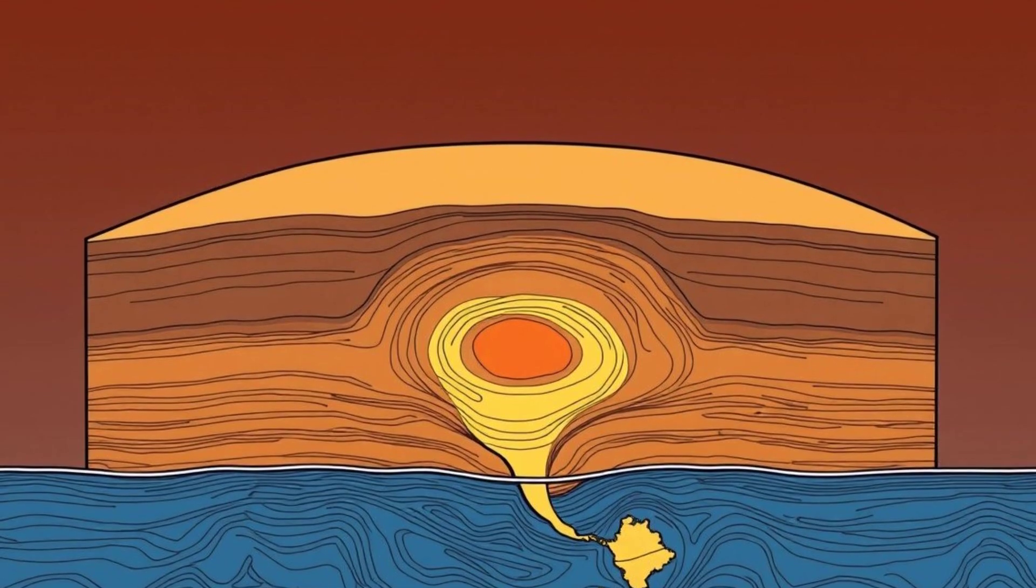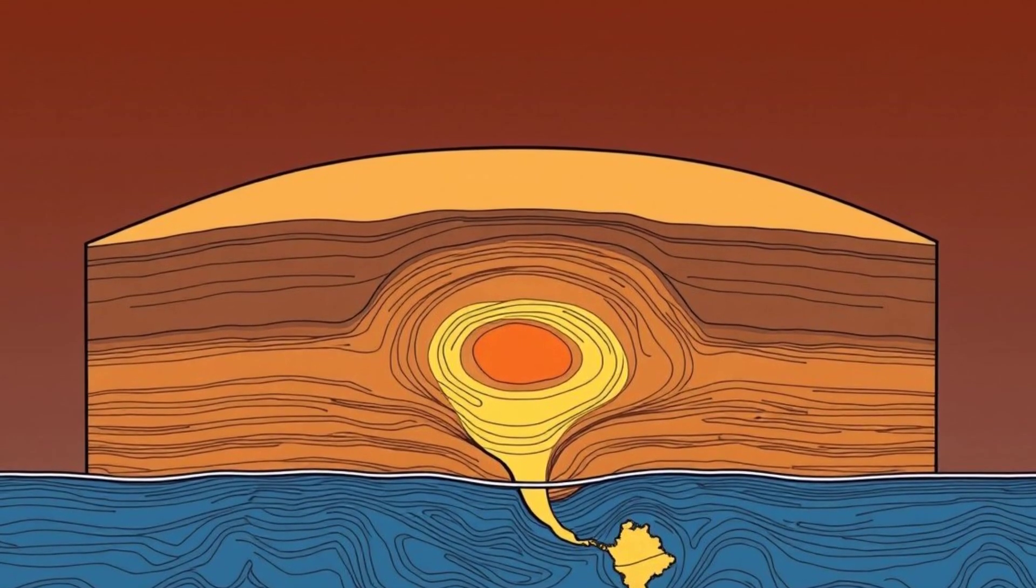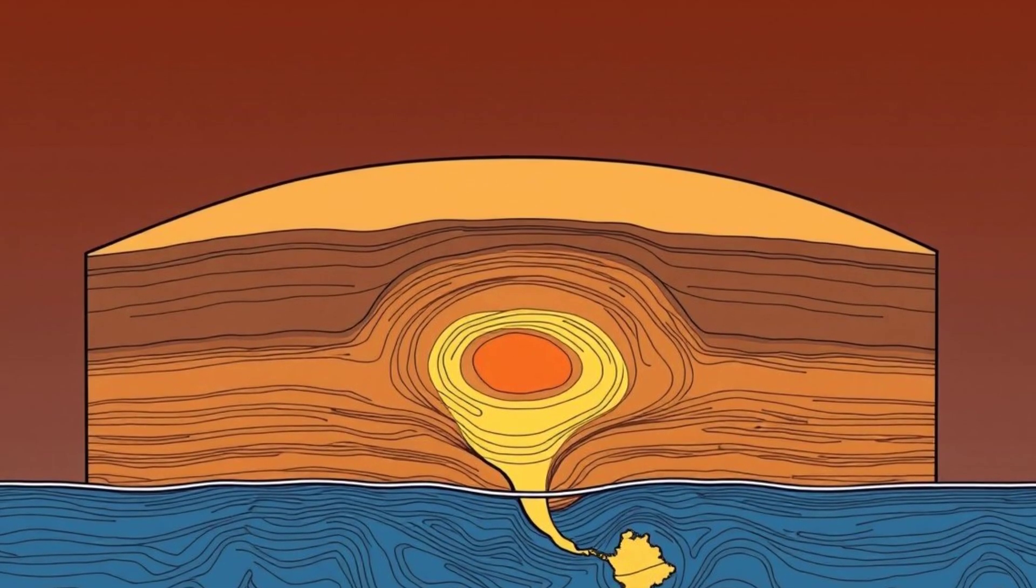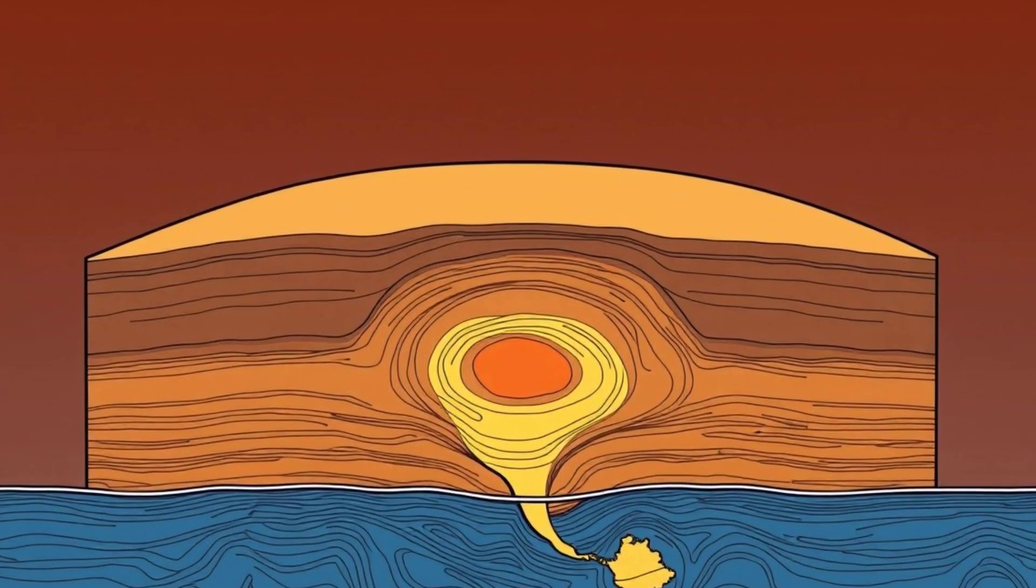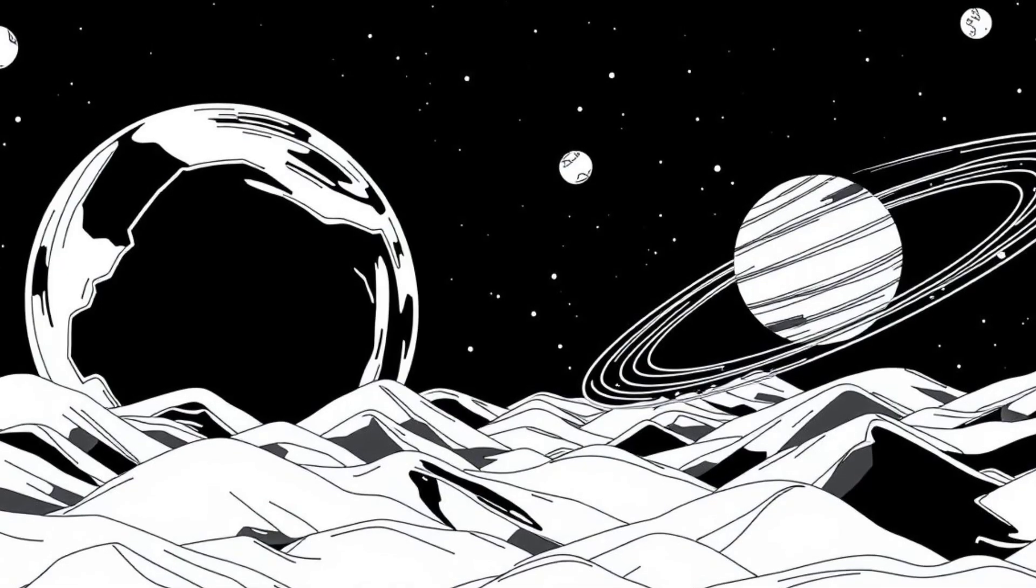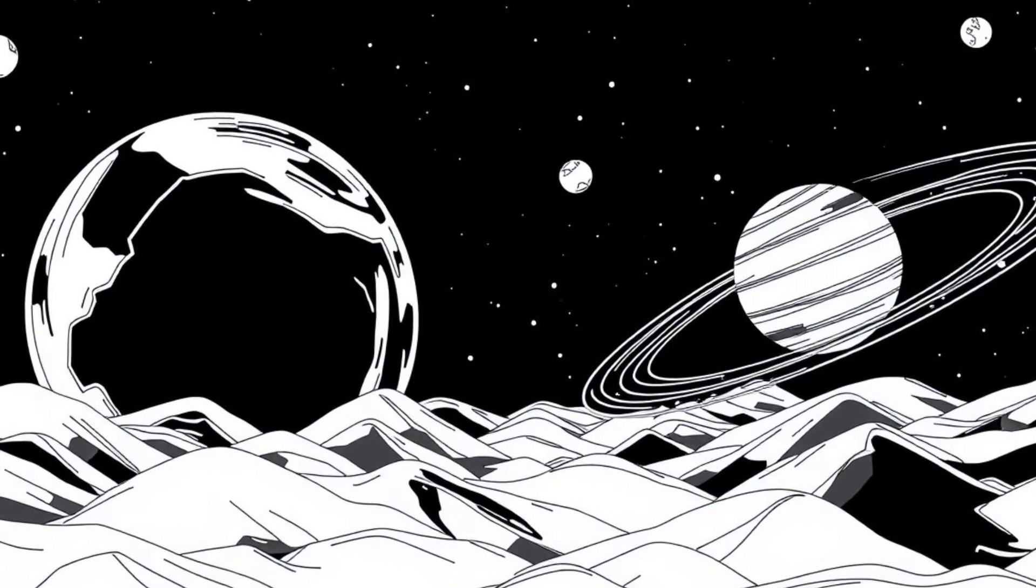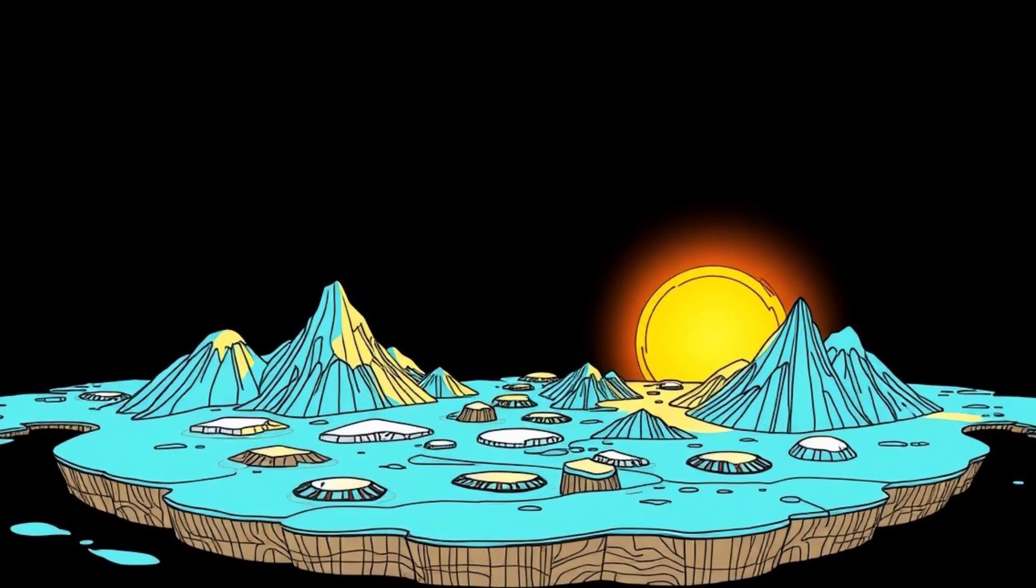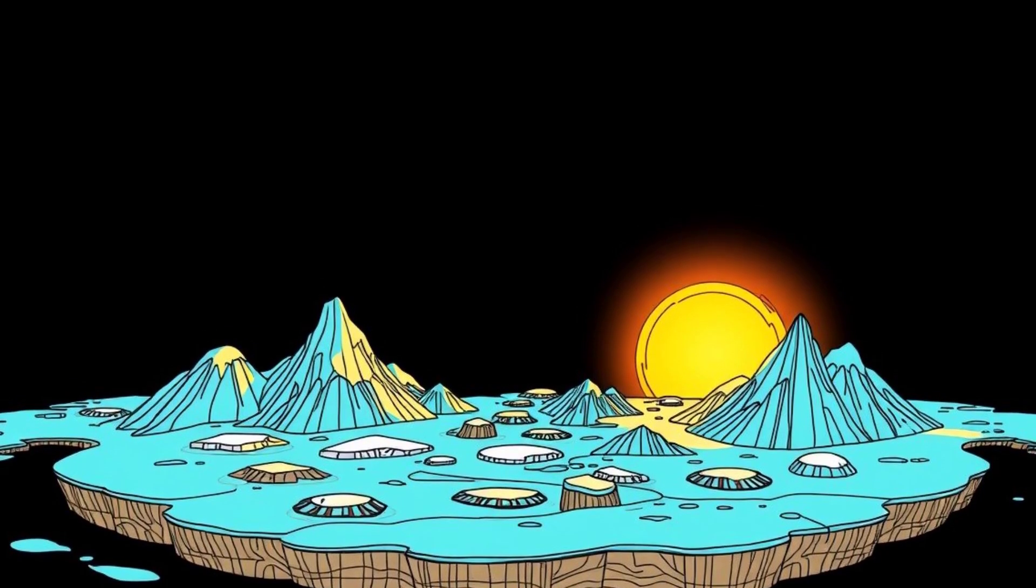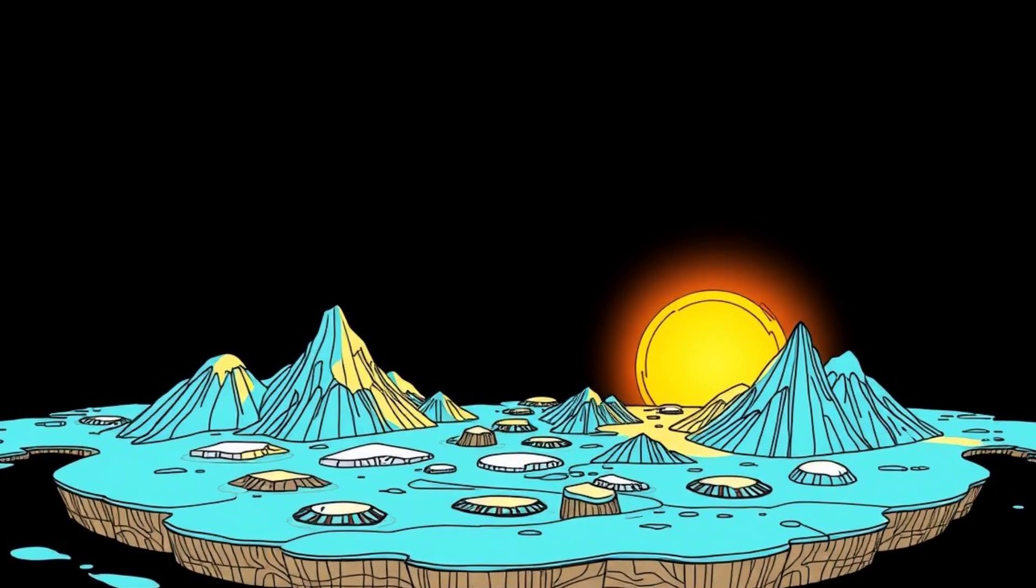The second explanation involves the Earth's mantle, the thick layer of semi-solid rock beneath the crust. Scientists believe that convection currents in the mantle beneath Hudson Bay have caused mass to shift away from the region. This redistribution of material further reduces the gravitational pull in that area. It's a double effect. Both the lingering impact of the ice age and the movement of Earth's internal layers contribute to the weaker gravity.